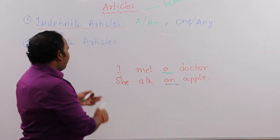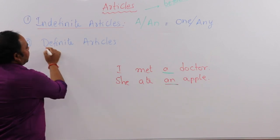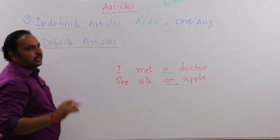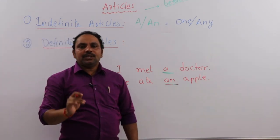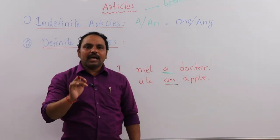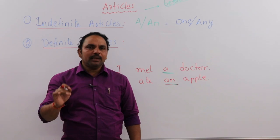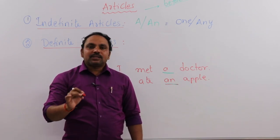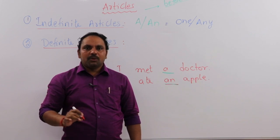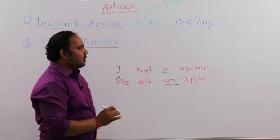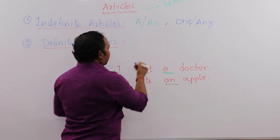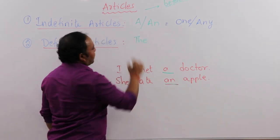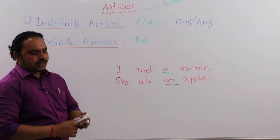And the second type of article is known as definite article. The definite article is the article which is used to tell about a particular person, place, or thing. When we need to specify a noun clearly and particularly, we use the definite article. 'The' is the definite article.